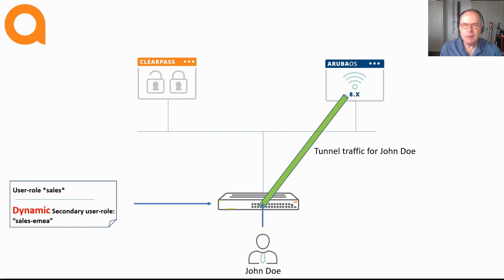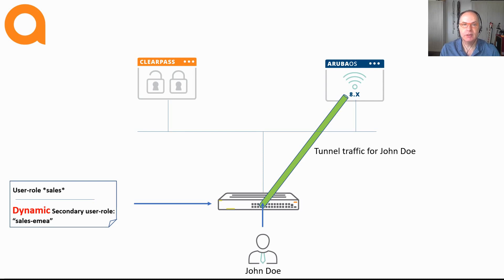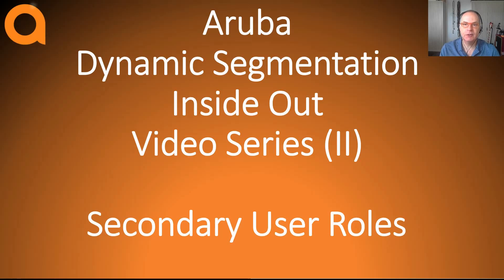Now, how does this all work with clients and ports? Can I have multiple clients sitting on a single port with different user roles, or just one client per port? What if I only need one client per port without authentication, authorization, and accounting? What if I want enforcement to take place at the Aruba Mobility Controller? Stay tuned for the next video, because that's where it gets really cool — covering user-based tunneling and port-based tunneling.